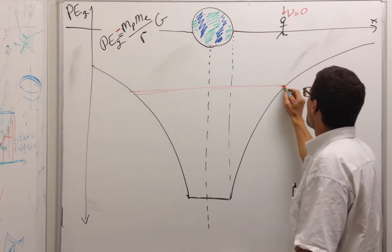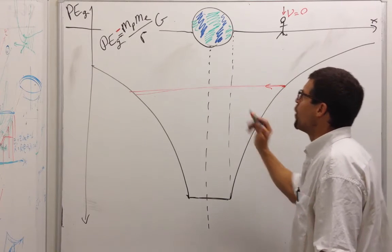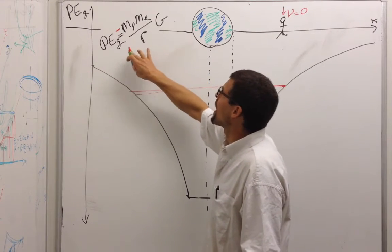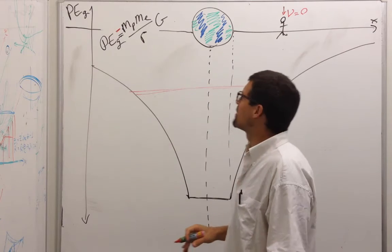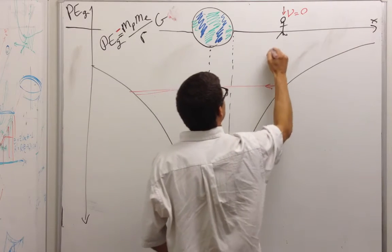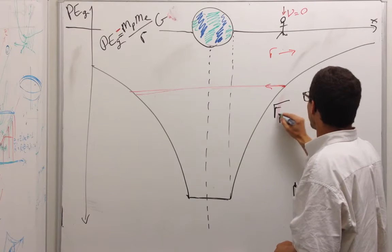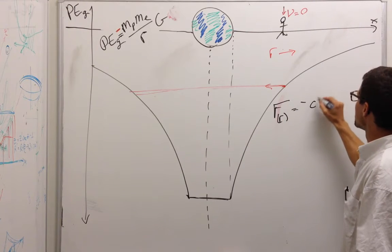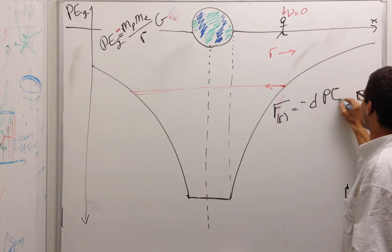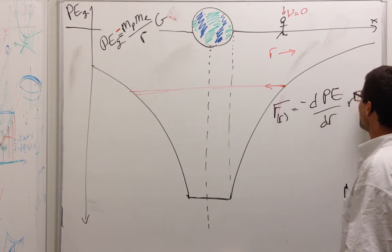But we're curious, what is the force pulling you to the planet? We know that it should be the gradient of that potential energy. Let's call this the r-direction. We're going to say that the force in the r-direction is equal to the negative of the gradient, d potential energy, dr, in the r-direction.